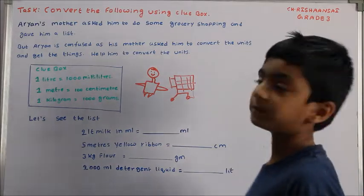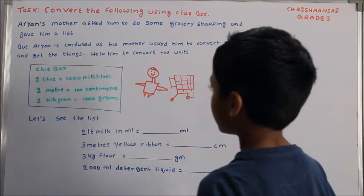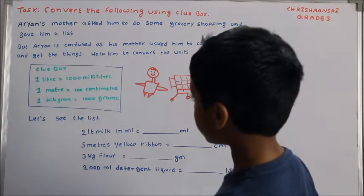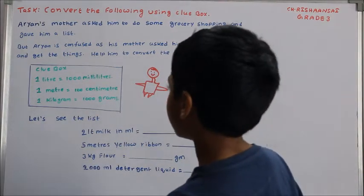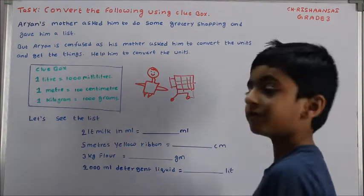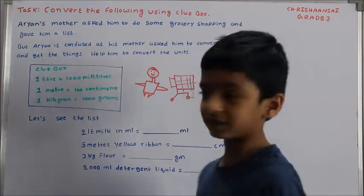Clue box: 1 litre equals 1000 millilitres, 1 metre equals 100 centimetres, 1 kilogram equals 1000 grams. Let's see the list.